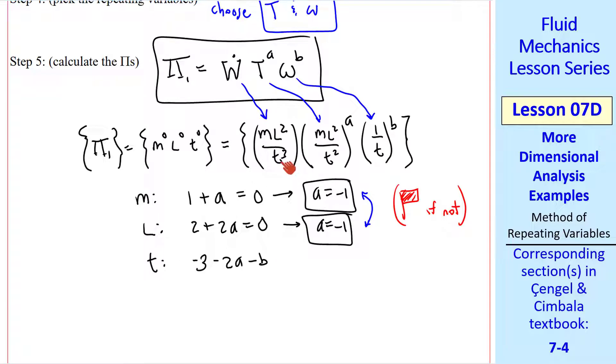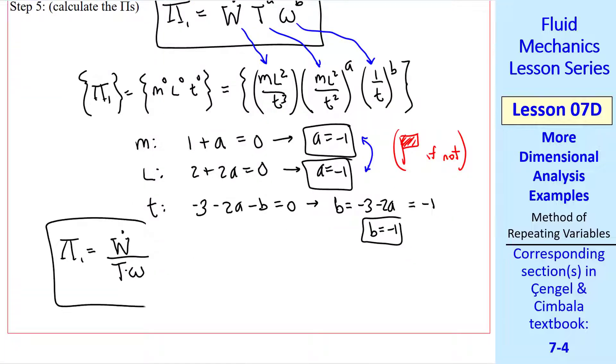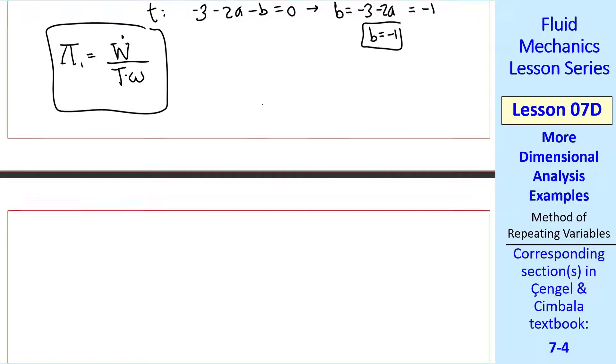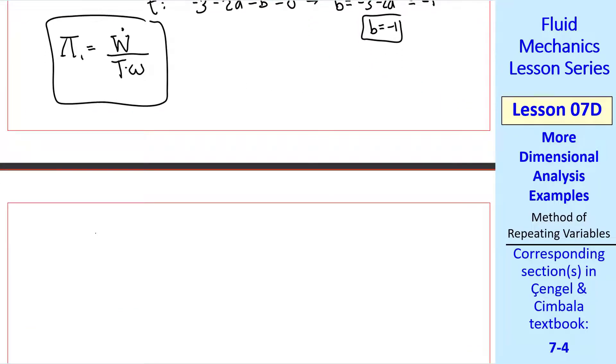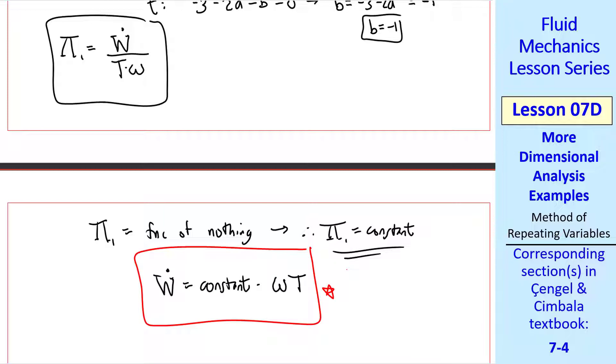Finally, for t, negative 3 minus 2a minus b all has to equal 0. Hopefully by now you can do these in your head as we did here without writing it all out. b is negative 3 minus 2a, or negative 1. So our pi 1 is w dot over t times omega. We have the same situation as last time. Namely, pi 1 is a function of nothing, therefore pi 1 must be a constant.